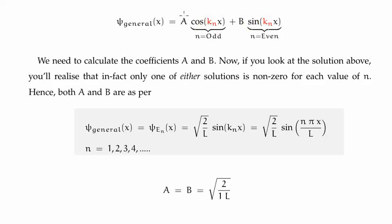And that basically means that A and B must be equal if the general solution is to remain normalised, and hence the normalisation constant is going to be the same as when we had the infinite potential well from 0 to L. That's what I covered in the previous video, and there I showed that the coefficient is root 2 over L, so I'm not going to do it here.